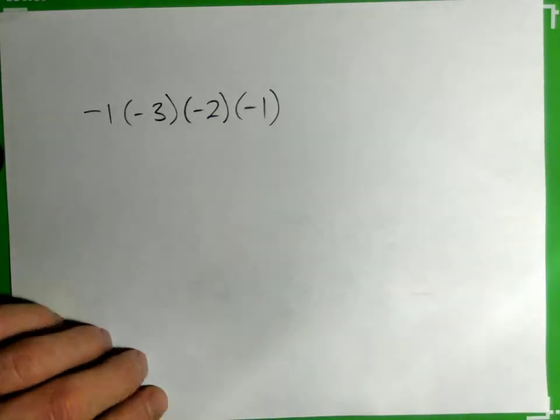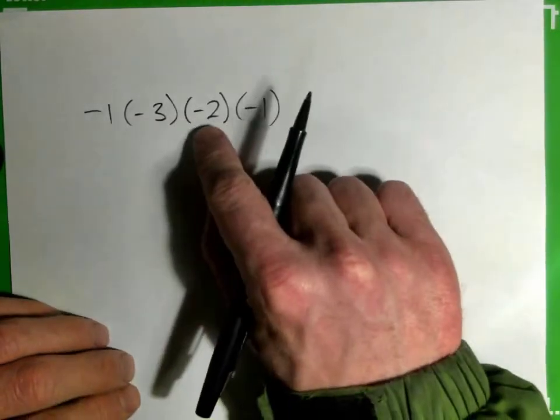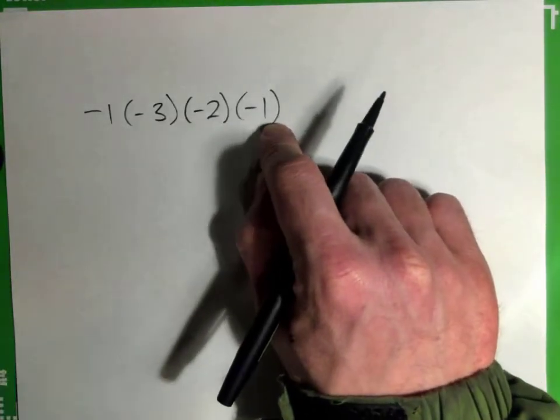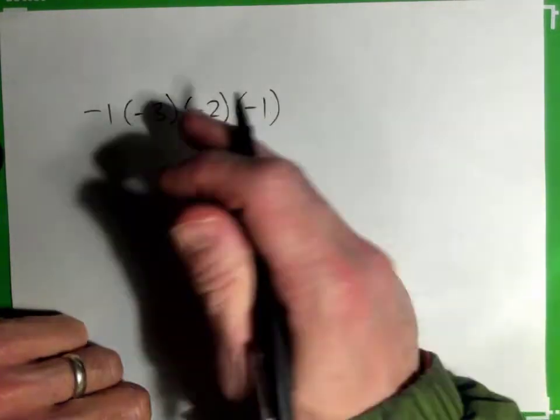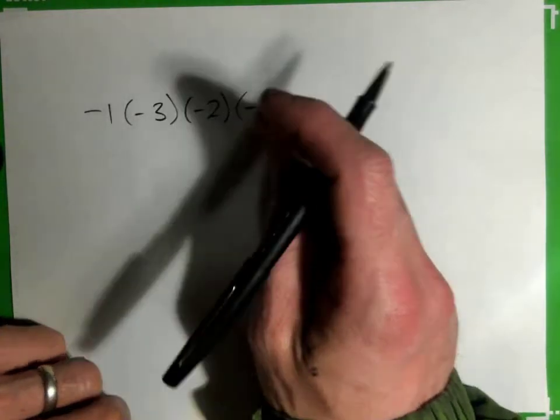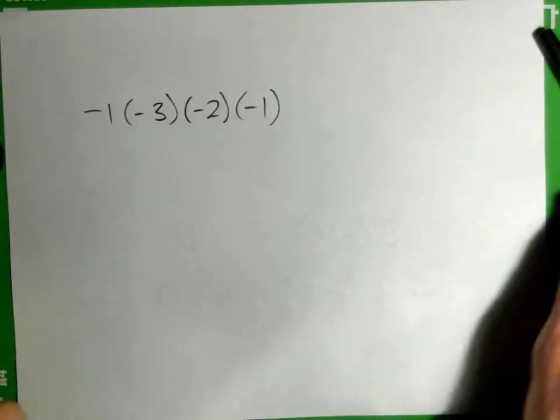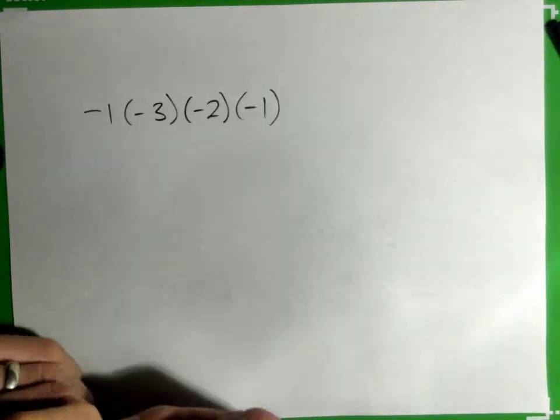Alright, so you've got negative 1 times negative 3 times negative 2 times negative 1. Negative times negative is positive, so let's just forget it.